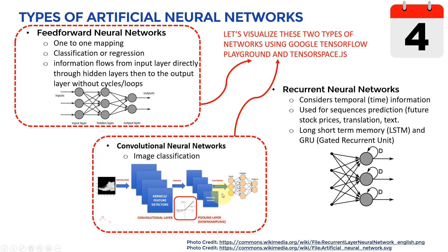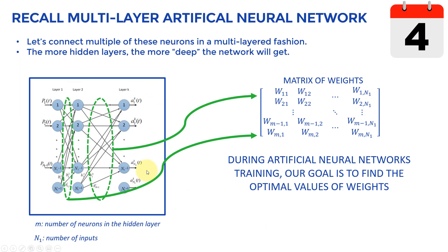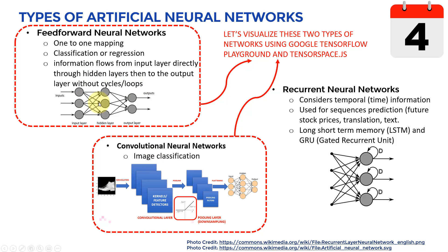I'll cover CNNs in great detail today. From a high level, feed-forward artificial neural networks grab multiple neurons and connect them in a multi-layered fashion. They are called feed-forward because the data flows from the input to the output in one direction. These networks can be used to solve classification problems and regression problems, and these are the type we'll visualize in TensorFlow Playground today.